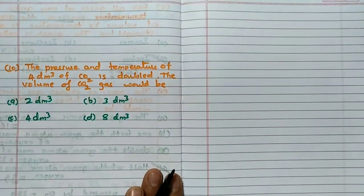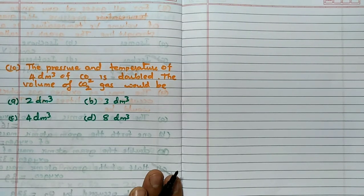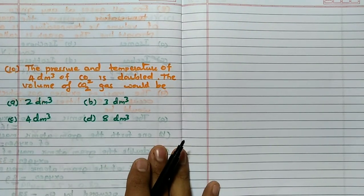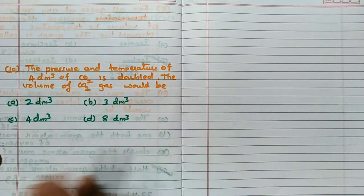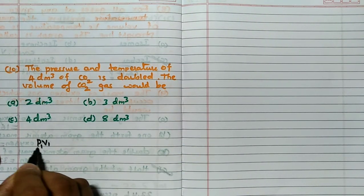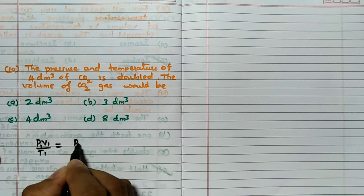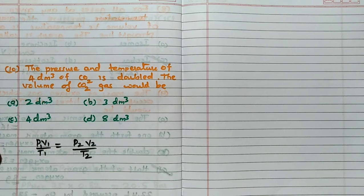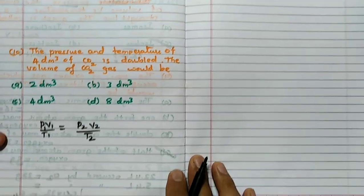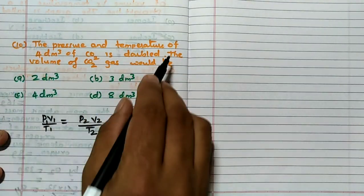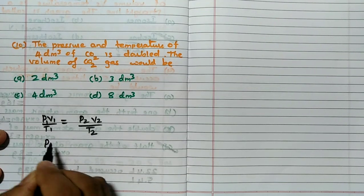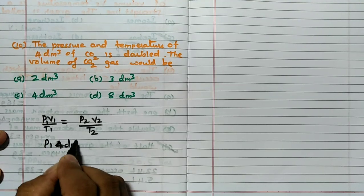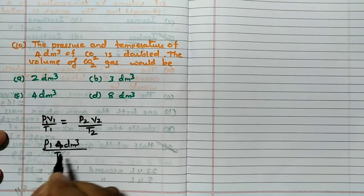The last question - the pressure and temperature of 4 dm³ of CO2 is doubled, then the volume of CO2 gas would be. Very simple. Pressure and temperature and volume given means, definitely you have to think about the relationship P1V1/T1 = P2V2/T2. So in this particular case, P1 is P1 only, V1 is given 4 dm³, divided by T1 is T1.